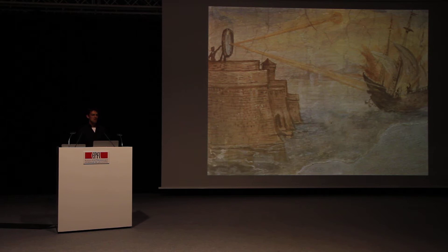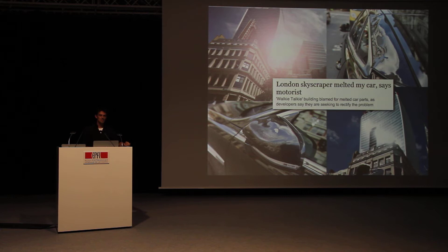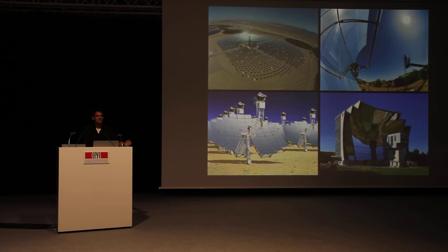You might have seen in the news a few weeks ago these images, where the curved facade of a skyscraper actually focuses light to such high intensity that it melts plastic — kind of a drastic way to discourage parking in a city. But of course, this idea of focusing light can also be used for useful things, for example to harvest the sun's energy and create heat or electricity by focusing light on a small area using curved mirrors.